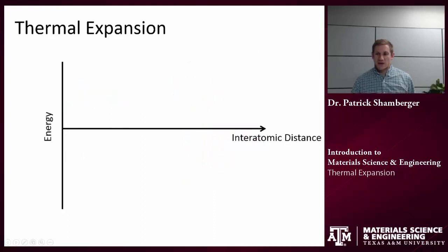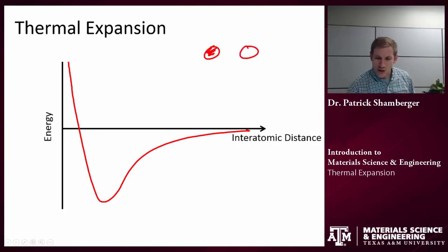Where does thermal expansion come from on the atomic level? You'll remember that we talked about bonding curves before. This is looking at the bond between two atoms. We're plotting the energy versus the interatomic distance, versus the distance between those two atoms. We said before that at zero Kelvin, the equilibrium distance is going to be given by that energy minimum. I would call this R naught. That's the equilibrium distance, if there's no temperature in the system.